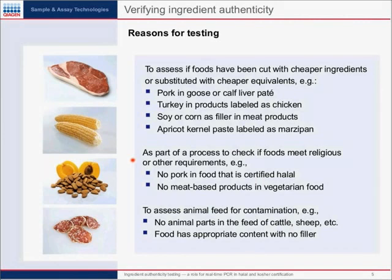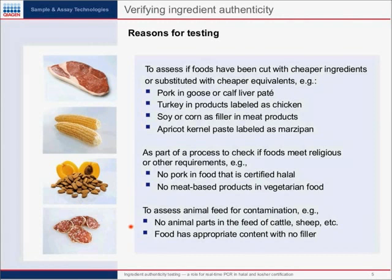Another reason for testing would be to check if foods meet a religious or other requirement — for instance, to determine that no pork is in food certified halal, or that there are no meat-based products in vegetarian food. As vegetarian food becomes more widely utilized, this becomes a more interesting area. Finally, to assess animal feed for contamination — with the specter of BSE perhaps returning, it's very important to determine that there are no animal parts in cattle, sheep, and other feed, and also to ensure that food has the appropriate content with no filler added, so you get what you're paying for as a consumer.